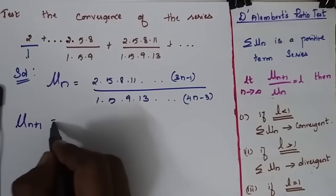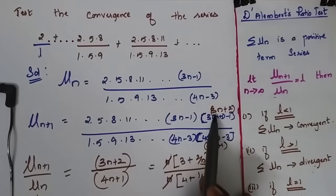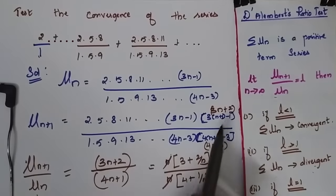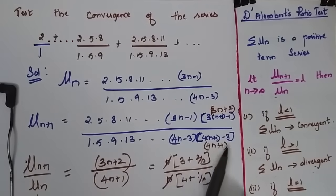My un plus 1 is equal... So when I simplify here I will get 3n plus 2. Here it is 4n plus 1.